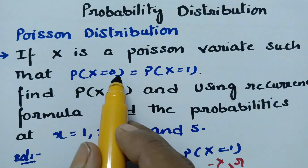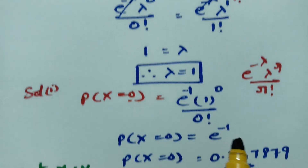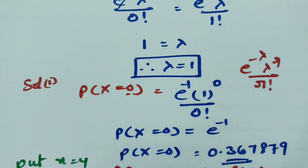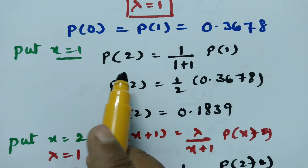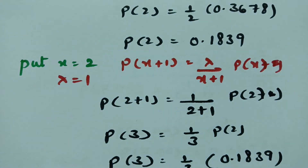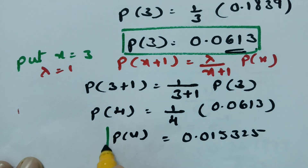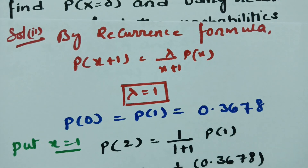This is how we find probabilities using the recurrence formula. To summarize: from P(X=0) equals P(X=1) we got lambda equals 1, then P(0) equals 0.3678. Using the recurrence formula we found P(2) equals 0.1839, P(3) equals 0.0613, P(4) equals 0.015325, and P(5) equals 0.003065. It's simple if you follow these steps. Thank you so much for watching and staying till the end.